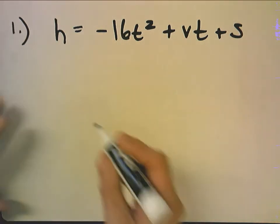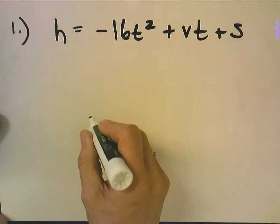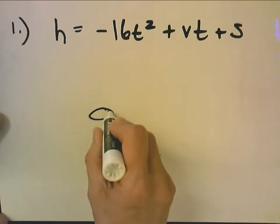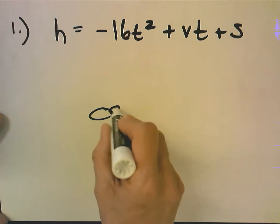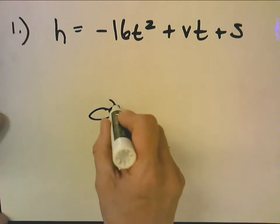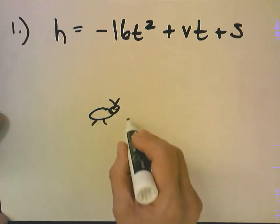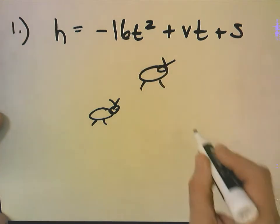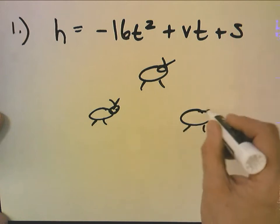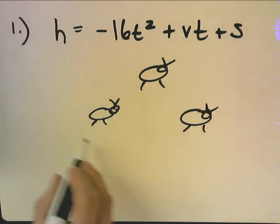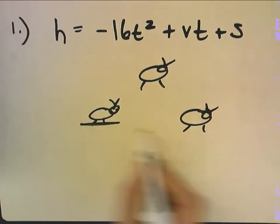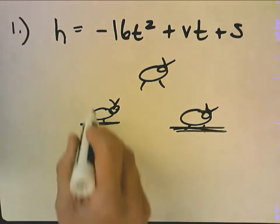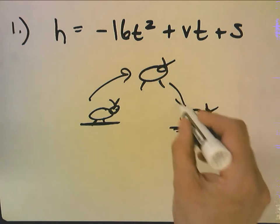What this means is that if you have a little bug, this is my little bug, and your little bug jumps into the air and then it eventually hits the ground again, its starting height was zero because it started on the ground. It leaped into the air and then it landed on the ground.